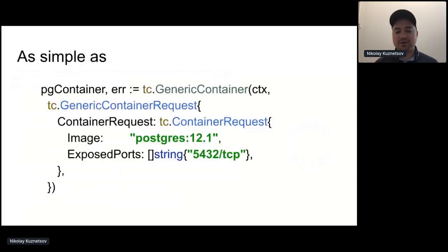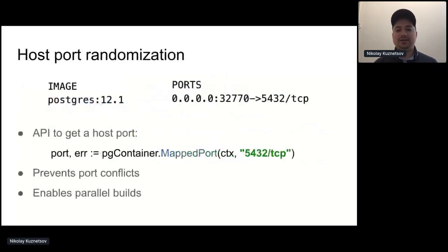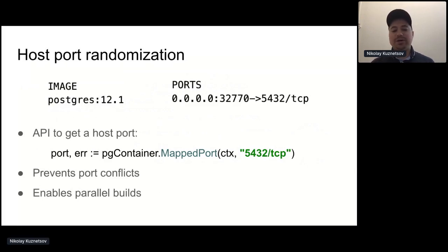Here is an API example. If you want to have a container started from your test, you just need to specify what image and what ports to expose. Then when you run this code, the container gets started and exposed to some random host port. Via the API, you can get that host port to construct the connection URL for your test to connect to. This approach prevents port conflicts and enables parallel builds.